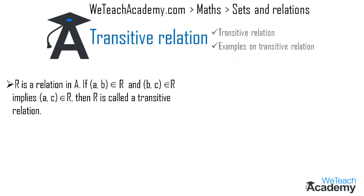So if r is a relation in set a, then if (a, b) belongs to r and (b, c) belongs to r, this implies (a, c) also belongs to r. Then r is said to be a transitive relation.